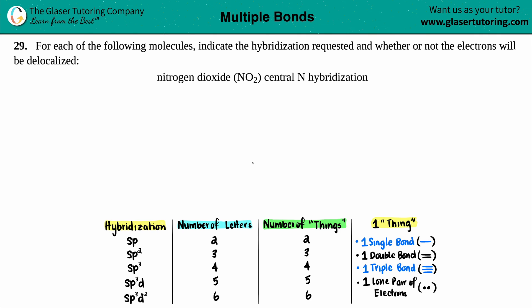Number 29 for each of the following molecules indicate the hybridization requested and whether or not the electrons will be delocalized. They tell us we have to do this for nitrogen dioxide which is NO2 and we need to find the central nitrogen hybridization.